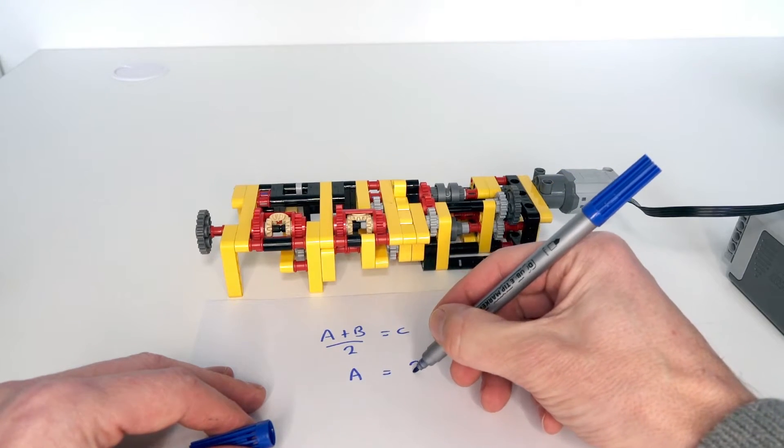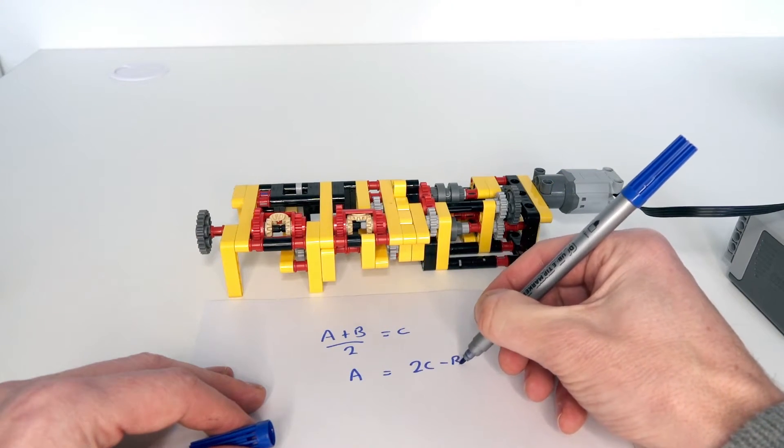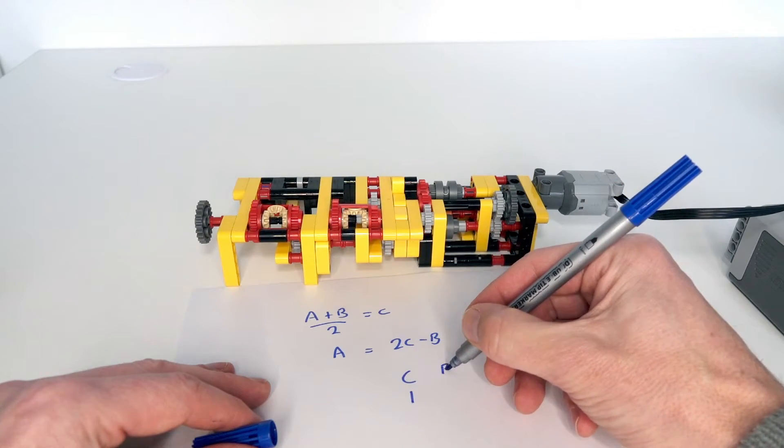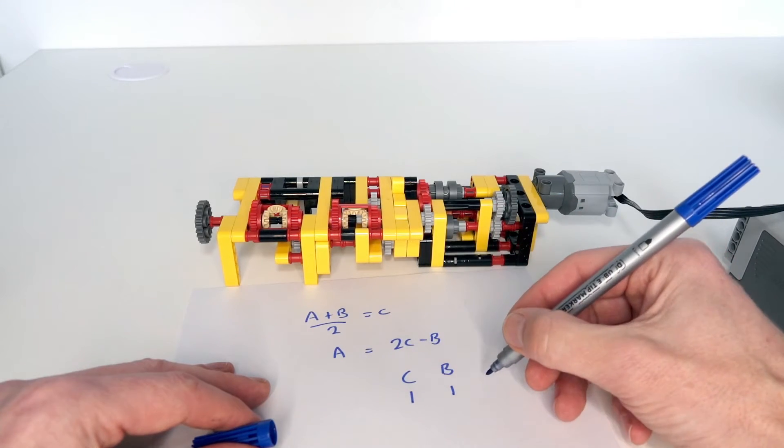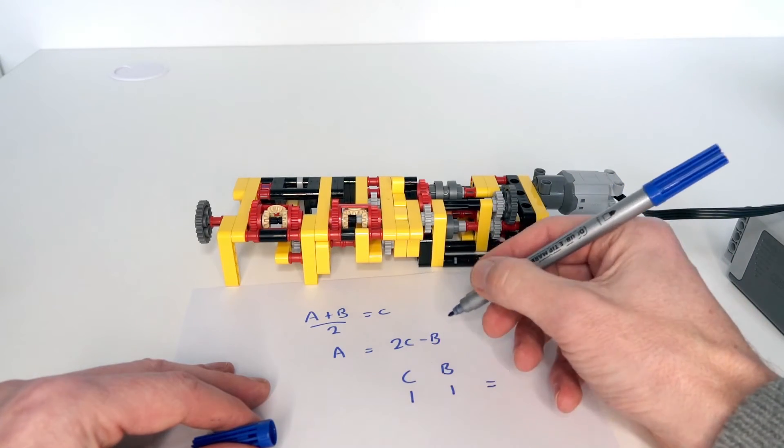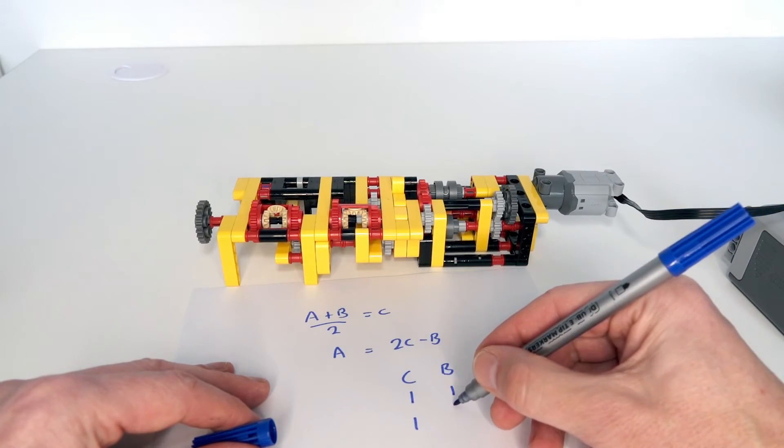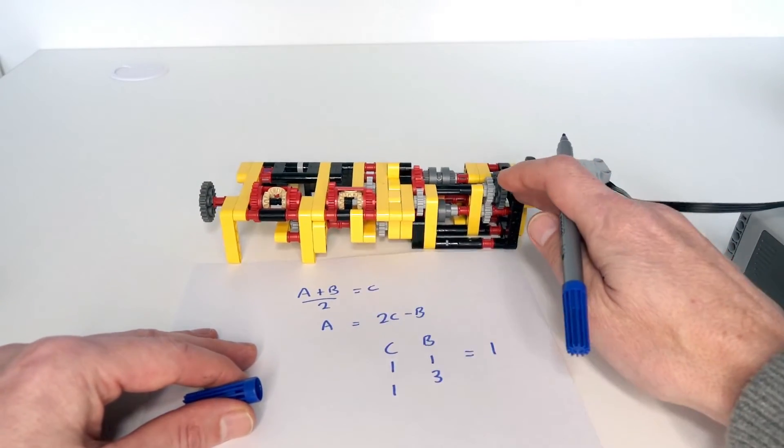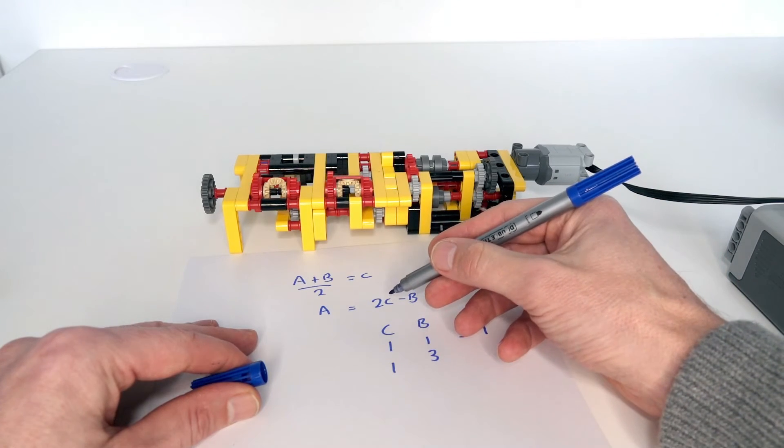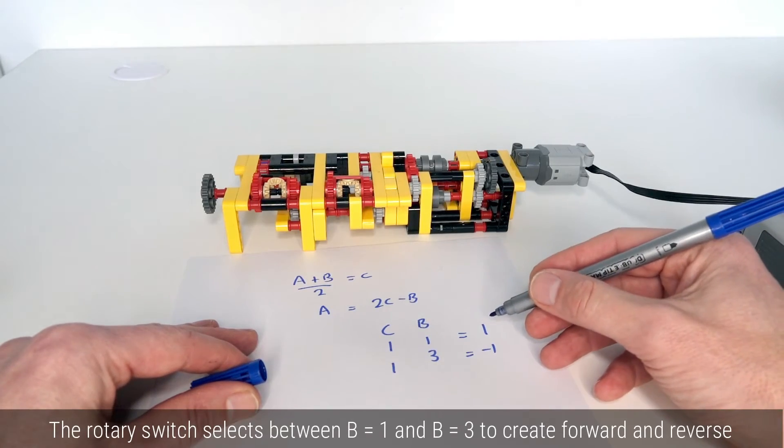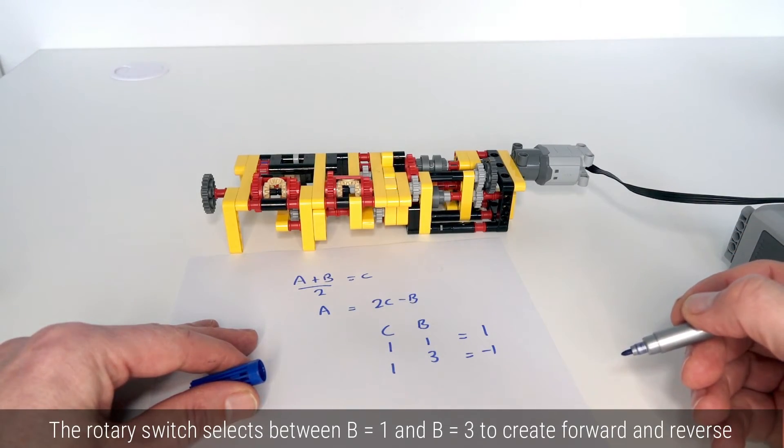And then if I set c to a value of 1, and b to a value of 1, then the output a is given by 2 times 1 minus 1, which is 1. And if I use c as 1 and b is equal to 3, then we find that it's 2 times 1 minus 3, gives us minus 1. So that gives us exactly the forward and reverse speeds that we're after.